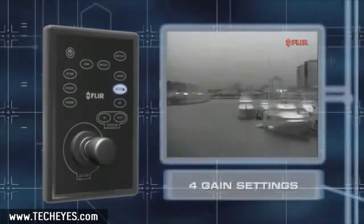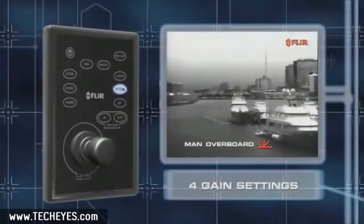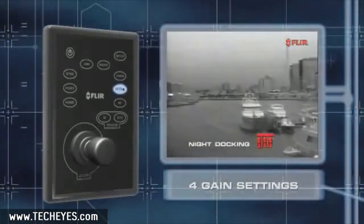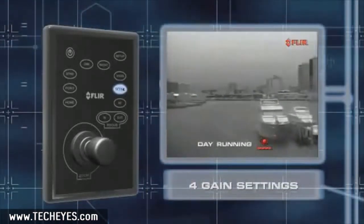Voyager 2's JCU also gives you instant access to its four preset gain settings that keep the infrared images optimized for time of day and activity.